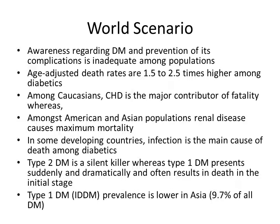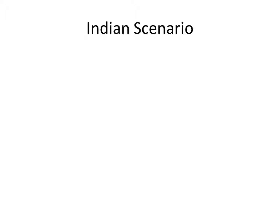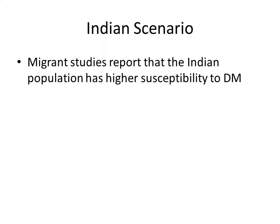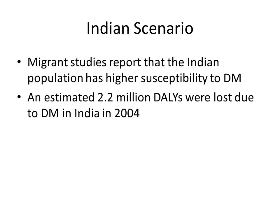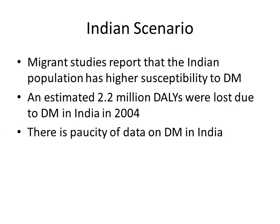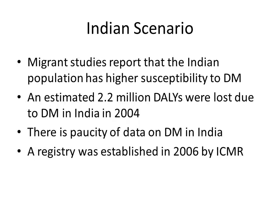Indian scenario: migrant studies have shown that the Indian population has a higher susceptibility to diabetes mellitus. An estimated 2.2 million disability-adjusted life years were lost due to diabetes mellitus in 2004. There is still a paucity of data on diabetes mellitus in India, so the exact prevalence and incidence are not known. Hence a registry was established in 2006 by the Indian Council of Medical Research.